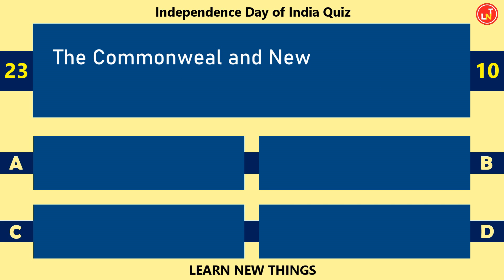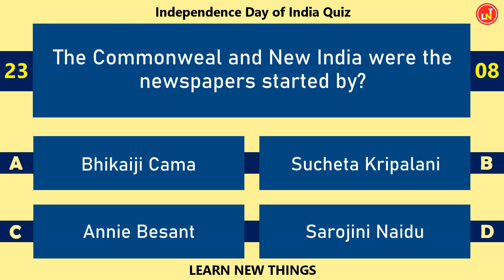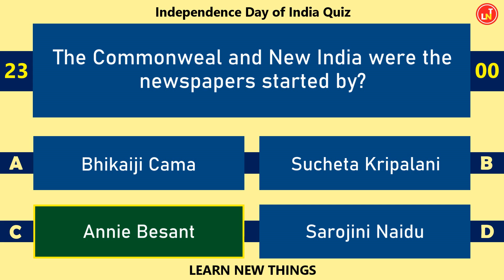The Common Wheel and New India were newspapers started by — Annie Besant.